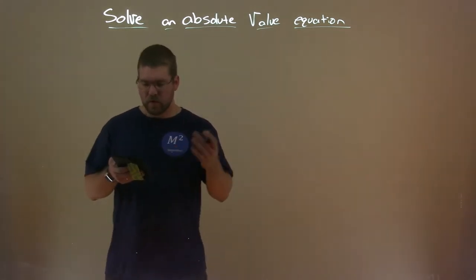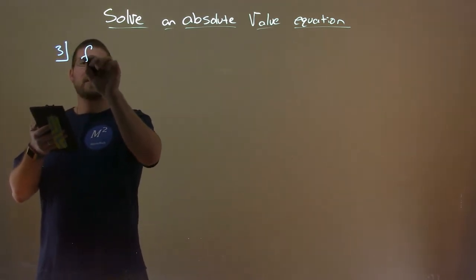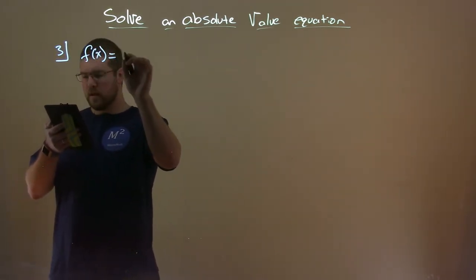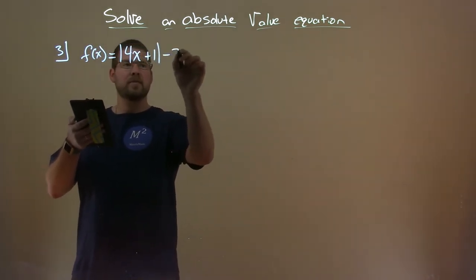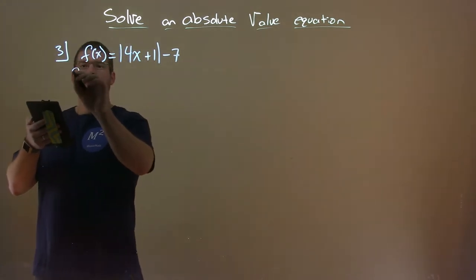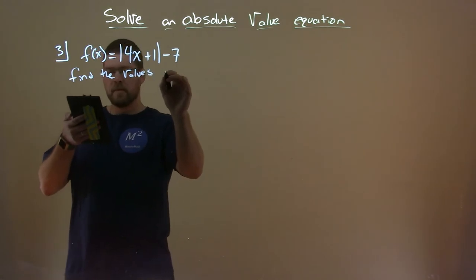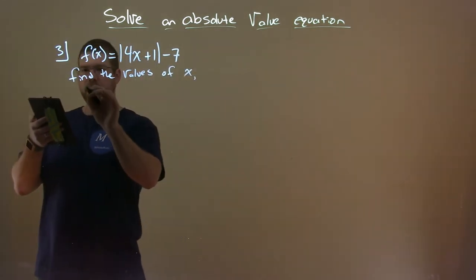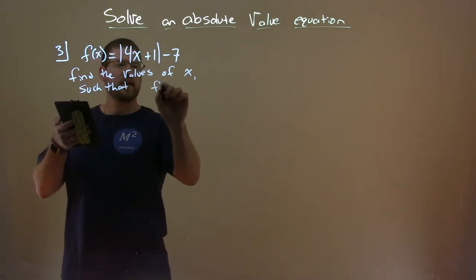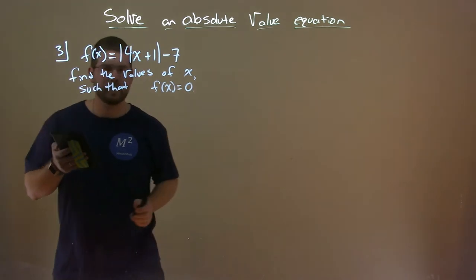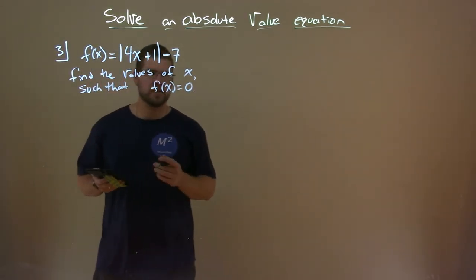Alright, so let's start with this example here. For the function f(x) equals absolute value of 4x plus 1 minus 7, find the values of x such that f(x) equals 0. Alright, so we're going to find what values of x cause this function to equal 0.